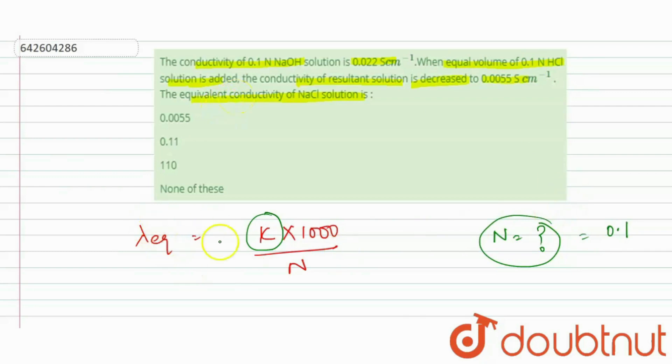If initial volume we suppose is V, and we have added the equal volume again that is V, so total volume will be 2V. So normality will be 0.1 upon 2, which is 0.05.